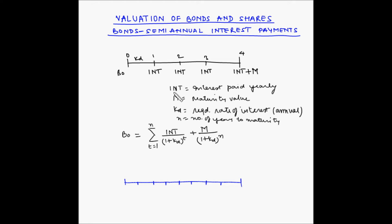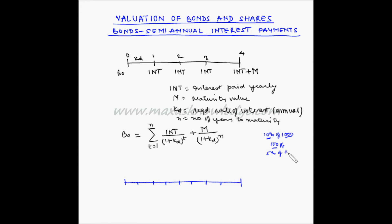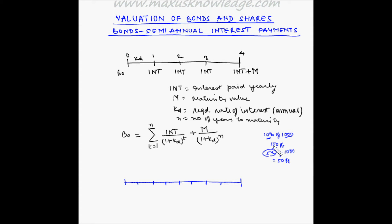If INT is the interest being paid yearly — for example, 10% of 1000 rupees face value gives a yearly interest of 100 rupees — then for 6-monthly interest, the rate becomes 5% of 1000, which is 50 rupees. So the interest paid to the investor becomes INT divided by 2.